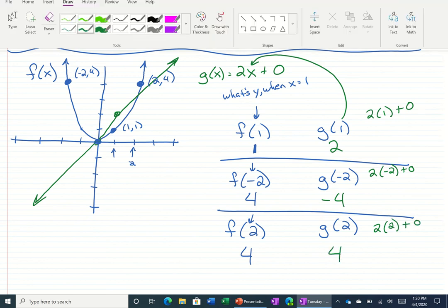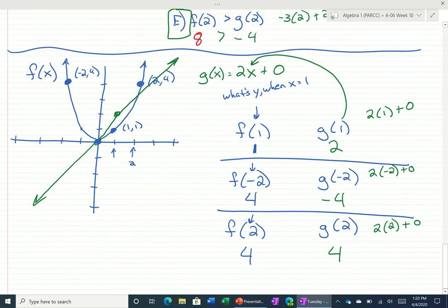So I did ask you to compare them. It looks like g of 1 is greater than f of 1 for the first one. f of negative 2 is greater than g of negative 2. And for the last one, it looks like they're totally equal to each other.